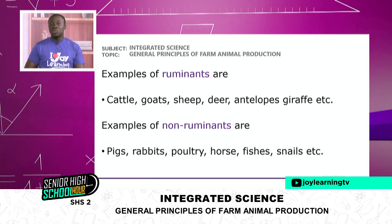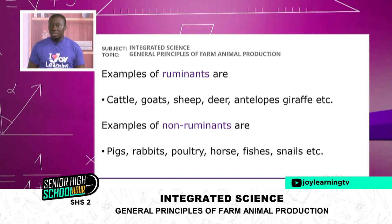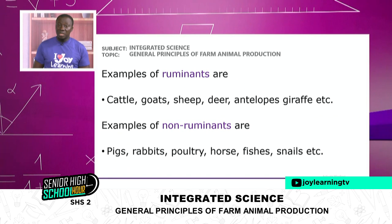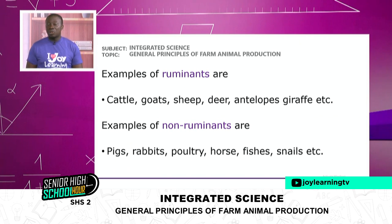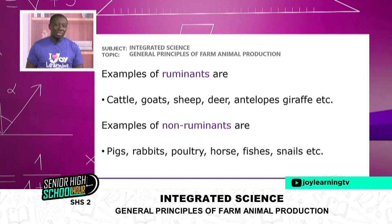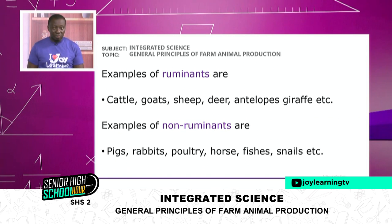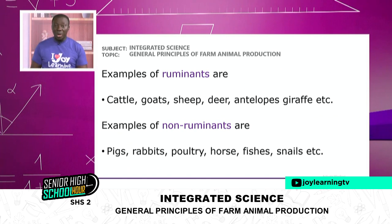Let us look at some examples of ruminants. From the JHS level, we were told that ruminants are animals with four stomach chambers and they can also chew their cud. When we look at animals that can chew their cud, the first one that comes to mind is the cattle or the cow. We also have goats — a lot of goats around us — and sheep as well.